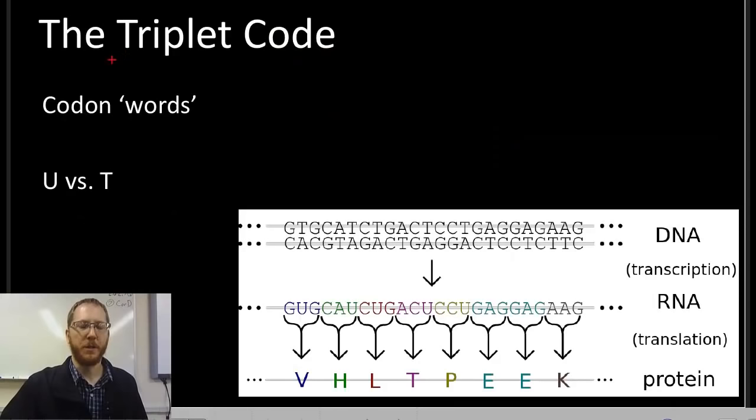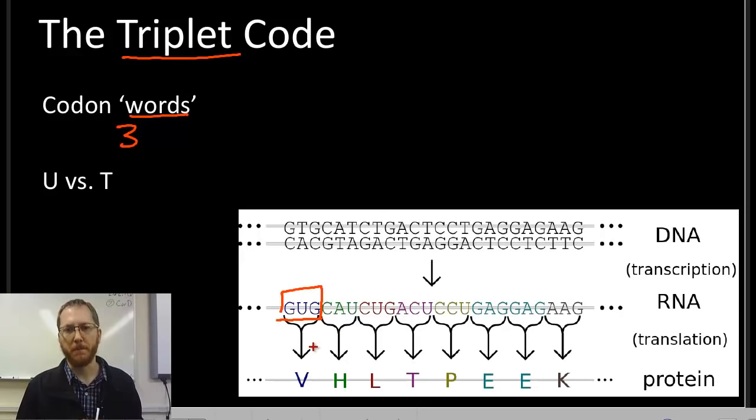The triplet code. Triplet means three. We're going to call these triplets codons. These are three nucleotides together. If you look at the DNA or mRNA and read them in threes, you'll be able to figure out how to make the protein they code for.